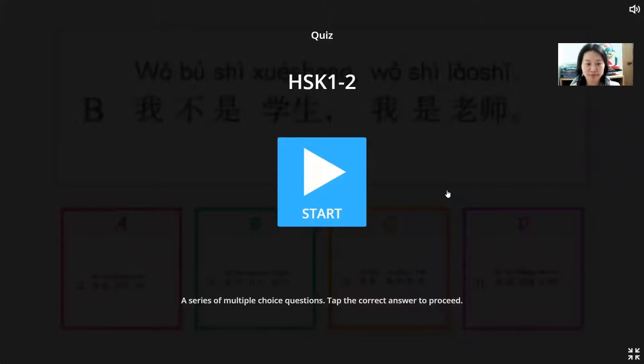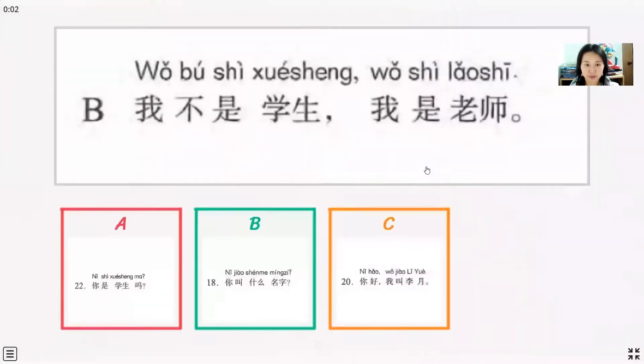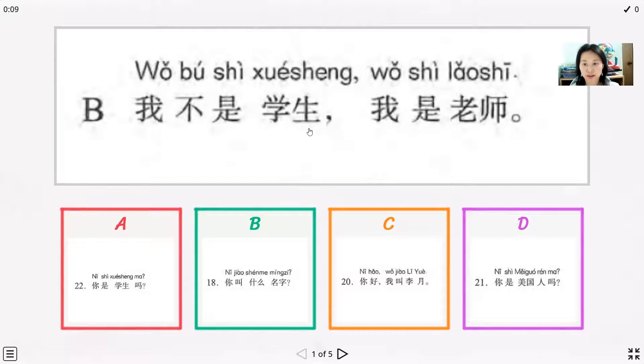Hello everyone, welcome to Nancy Chinese class. Today we just talked about HSK1 lesson 2 about this dialogue. Let's we start. The first sentence we just see this one is wo bu shi xuesheng, I'm not a student. Wo shi laoshi, I'm a teacher.